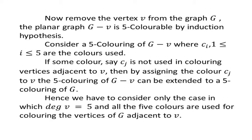Now we remove the vertex V from the graph G. So the resulting planar graph G minus V is five-colorable by the induction hypothesis. We consider a five-coloring of G minus V where the colors Ci are used, with i varying from 1 to 5.